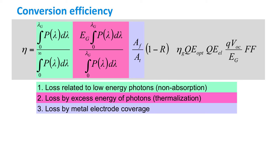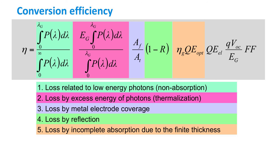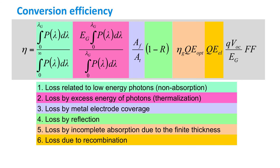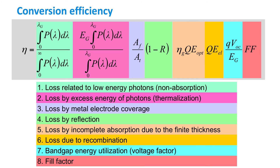The third term, the coverage factor, determines the shading losses due to the coverage of front contact electrodes. The fourth term describes the fraction of photons absorbed in the solar cell — those that are not reflected. The fifth term represents incomplete absorption due to a finite thickness of the absorber layer. The sixth term includes recombination losses. The seventh term takes the utilization of the band gap energy into account and is often called the voltage factor. The last term is the fill factor.